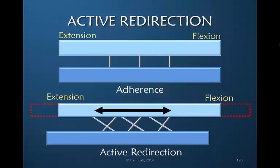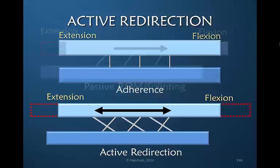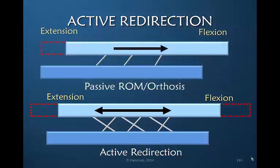If we were to use active redirection, we would be allowing both flexion and extension motion. Therefore, the total distance of excursion gained would be greater and it would be in reciprocal directions. So active redirection, rather than the passive application of force, is what creates a greater range of motion.